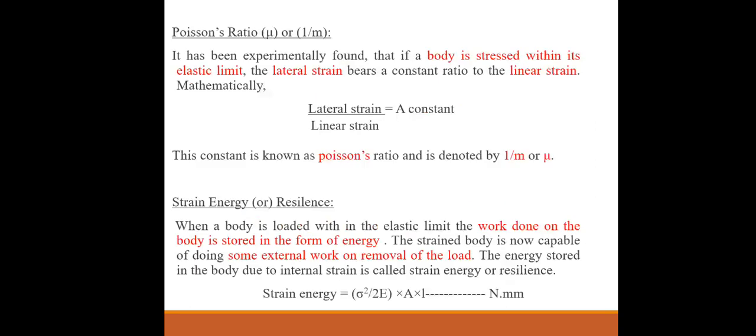Poisson's ratio. It has been experimentally found that if a body is stressed within its elastic limit, the lateral strain bears a constant ratio to the linear strain. Mathematically, lateral strain divided by linear strain equals a constant — this constant is known as Poisson's ratio, denoted by 1/m or mu.